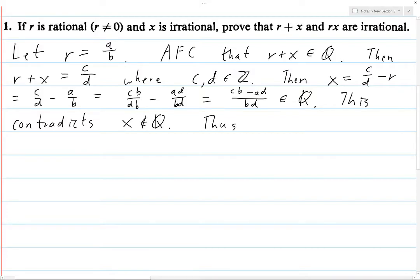And this contradicts the fact that X is not a rational number. And so therefore, it cannot be, so we assume for contradiction that R plus X is rational. And we arrived at a contradiction. So therefore, R plus X is not rational. Okay, so that's the first part.